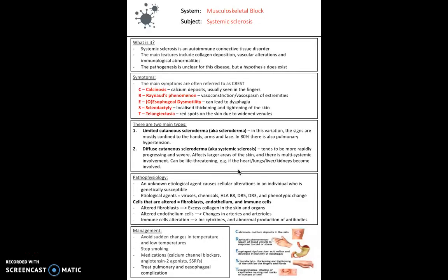Next we have systemic sclerosis. Systemic sclerosis is an autoimmune connective tissue disorder. The main features are collagen deposition, vascular alterations, and immunological abnormalities. The pathogenesis is pretty unclear, but there are hypotheses. There are two main types. You could have limited cutaneous scleroderma. In this variation, the signs are mostly confined to the hands, arm, and face. In 80% of patients there is also pulmonary hypertension. In diffused cutaneous scleroderma, in other words systemic sclerosis, this is much more rapidly progressing and severe. It affects larger areas of the skin and there's multi-system involvement and can be life-threatening. For example, if the heart, lungs, liver, or kidneys become involved heavily, it can lead to life-threatening complications.